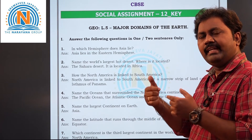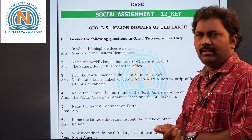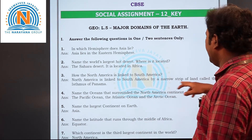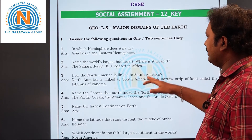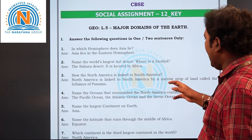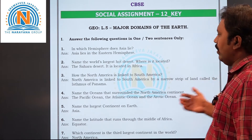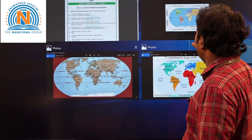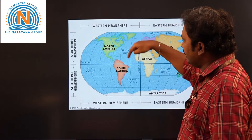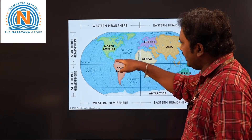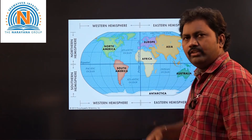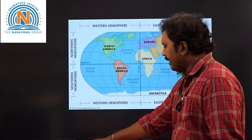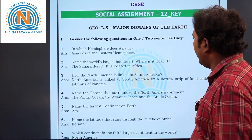Coming to the third question: how is North America linked to South America? North America and South America are linked by the Isthmus of Panama, also called the Panama Canal. See here on the map — this is North America and this is South America, and both are connected by this narrow strip of land called the Isthmus of Panama. There is a canal there, which is why it is also called the Panama Canal.